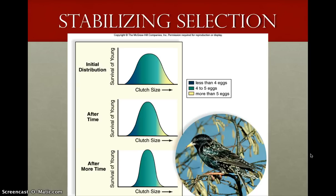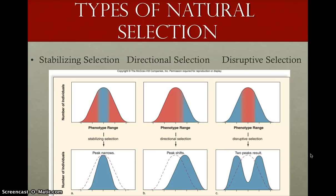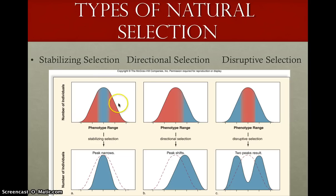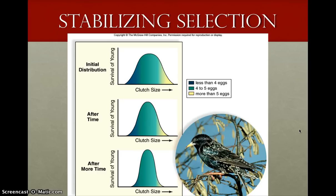There are three kinds of natural selection: stabilizing selection, directional selection, and disruptive selection. We're going to give examples of each. Basically, what these curves show is the distribution of variation, and we're going to see how they change based on what kind of natural selection it is.